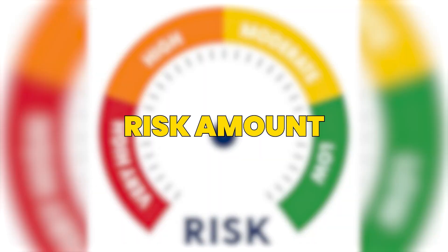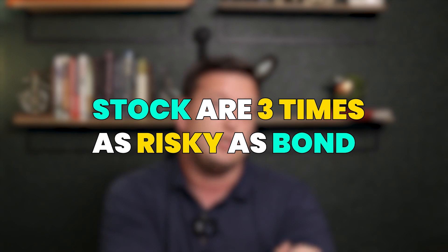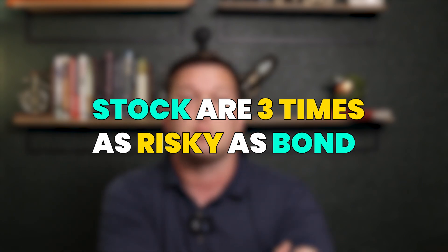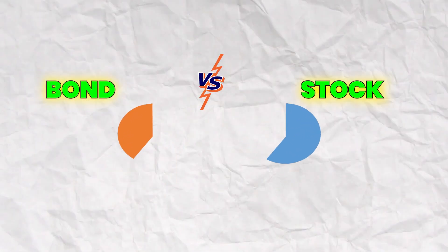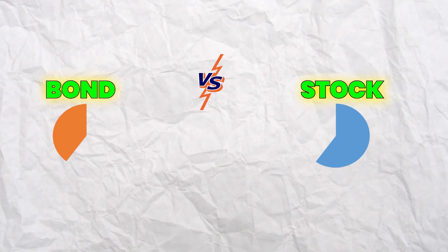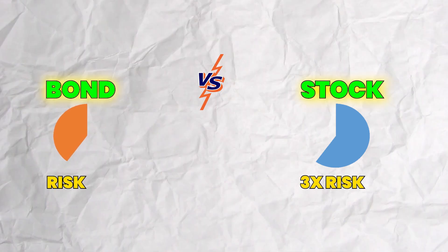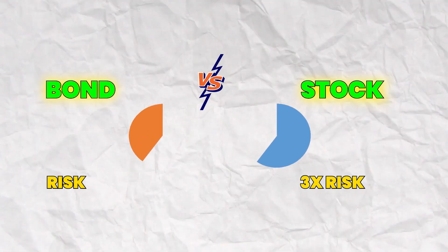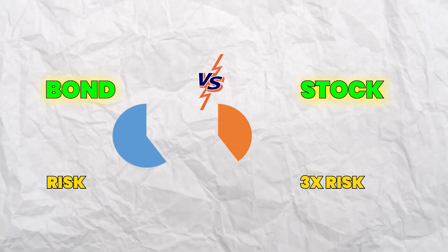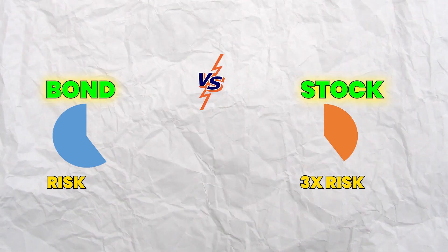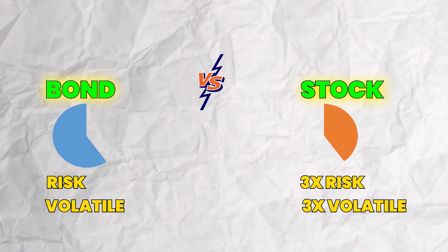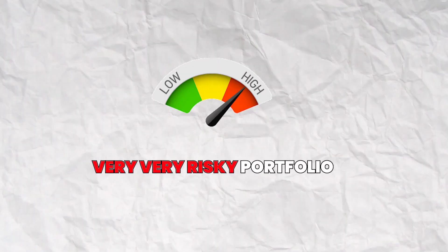The risk parity portfolio uses risk amount to allocate the proper percentages amongst the entire portfolio. As an example, stocks are three times as risky or as volatile as bonds. So where most people would have a 60-40 split with 60% in stocks, you'd really have a large amount of risk in that portfolio since stocks are three times more risky than the 40% of bonds you have. And even if you flip the two and put 60% bonds and 40% stocks, because stocks are three times as volatile as bonds, you'll still have a very, very risky portfolio.